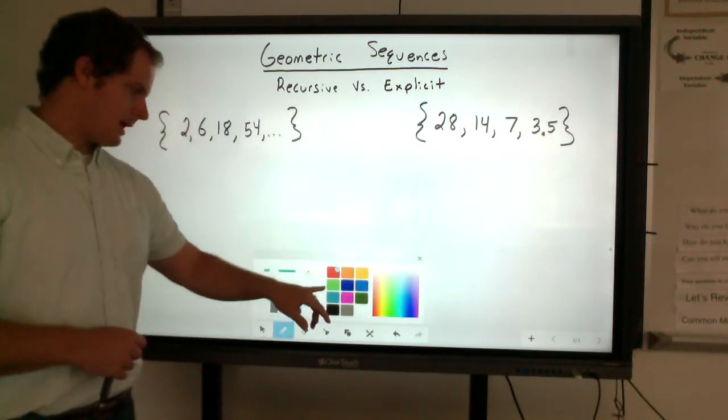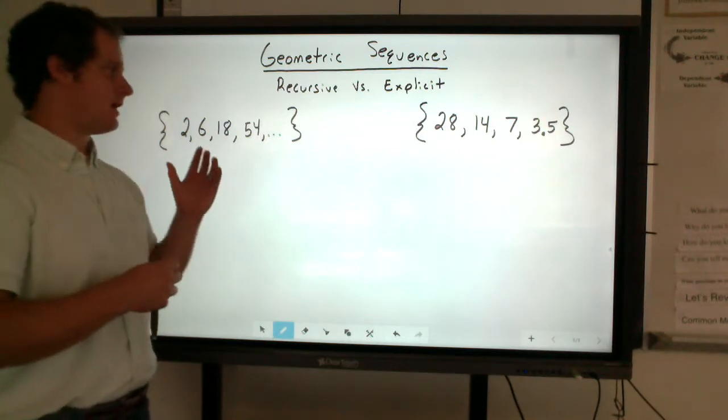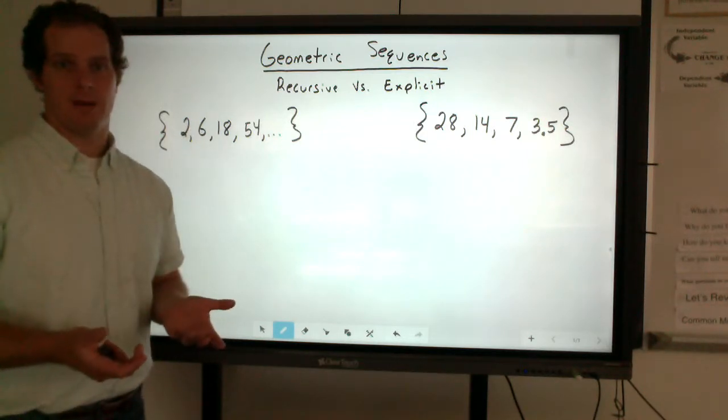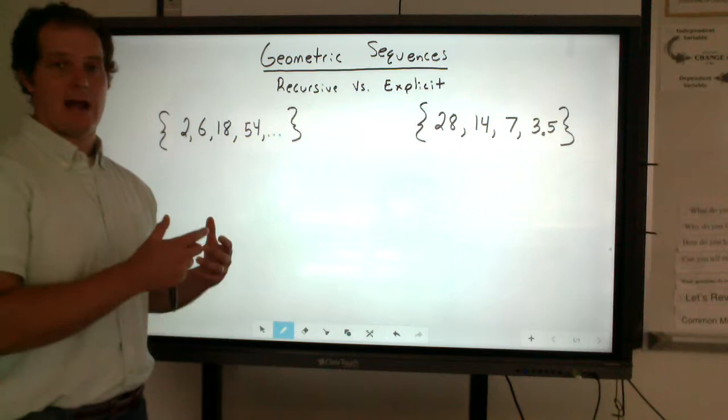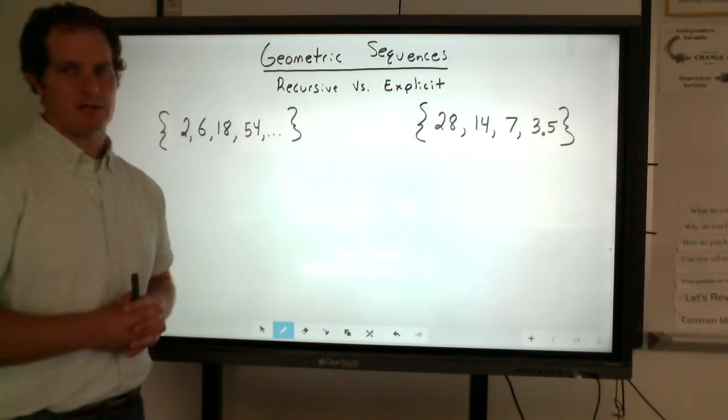One of the ways we can identify that something is geometric is to see if there is a common ratio. Common ratio is basically what is the value that each term is being multiplied by. When we looked at arithmetic sequences, we looked at the common difference. But for this, we're looking for the common ratio.